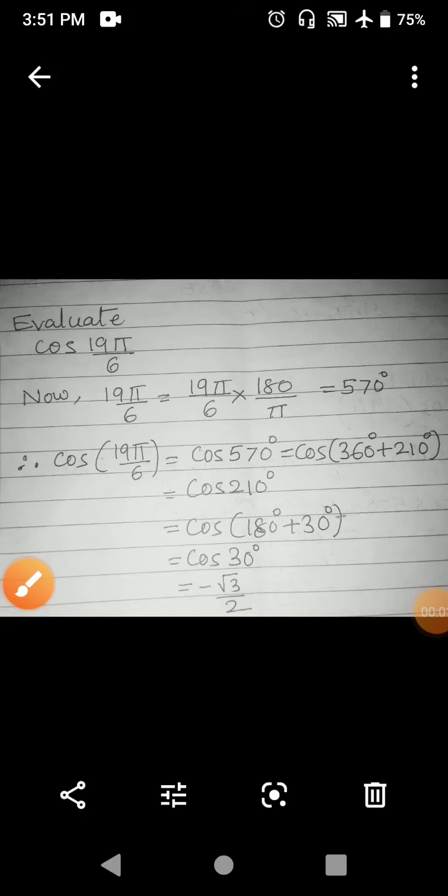Hi, let us continue with our topic allied angles. Let us try to find out the value of cos 19π/6. Now 19π/6 angle is given in radians. If it is not written degree, then it means that angle is in radians.